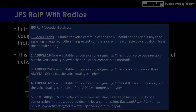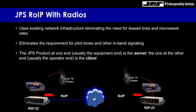JPS ROIP with radios uses existing network infrastructure, eliminating the need for lease lines and microwave sites. It eliminates the requirement for pilot tones and other in-band signaling. The JPS product at one end — usually the equipment end — is the server. The one at the other end — usually the operator end — is the client.